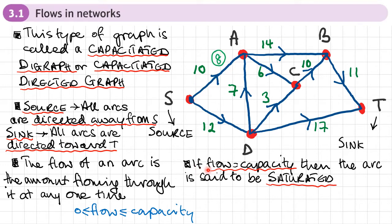If the flow equals the capacity — say the flow was 10 instead of 8 — then the arc is said to be saturated. The way we show the flow is using circles. The flow can't be negative, it can't exceed the capacity, it needs to be somewhere between the two.